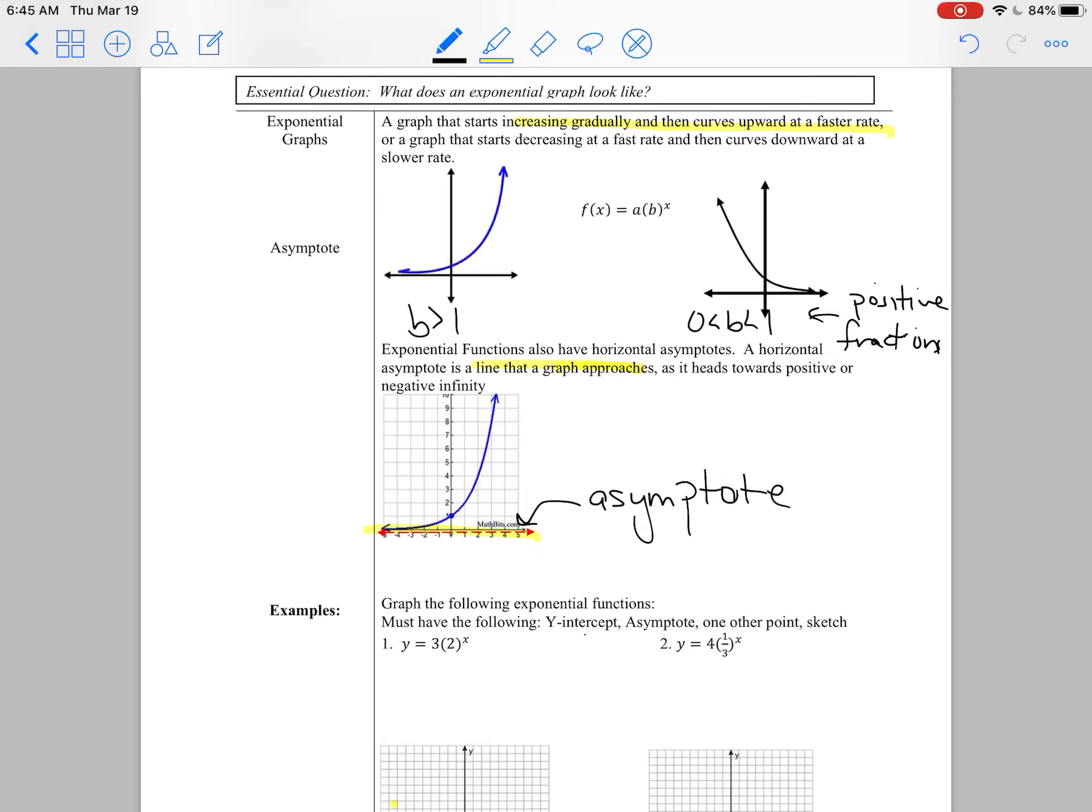Now for you guys, the asymptote is always going to be the x-axis, because we're keeping it pretty simple. And that equation is always y equals 0. So you need to remember that equation, y equals 0, because all the values along the x-axis, the y is 0.